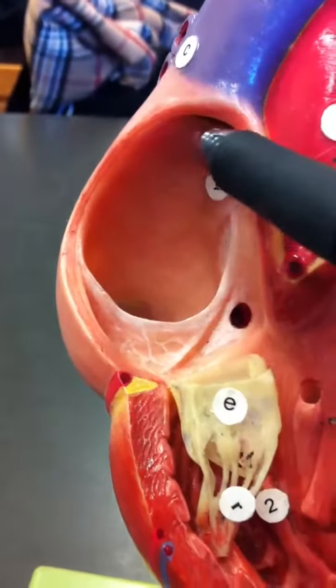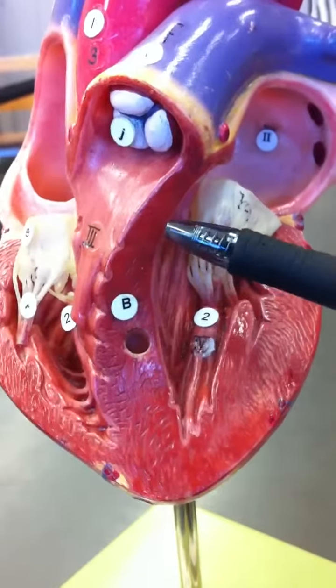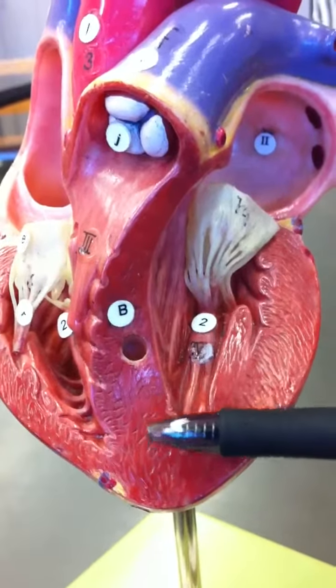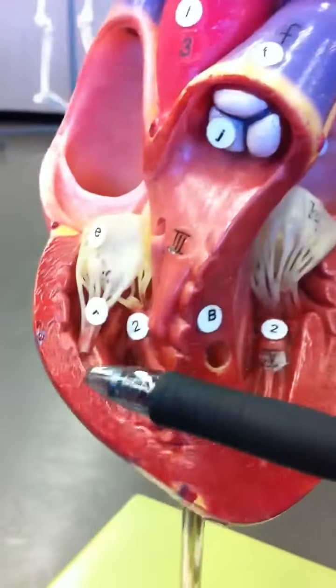It will push it down through the bicuspid valve into the left ventricle. You can see the left ventricle is always going to be a little meatier because it's got to send out the blood all throughout the body. This is the interventricular septum. This is what's going to separate the left ventricle from the right ventricle.